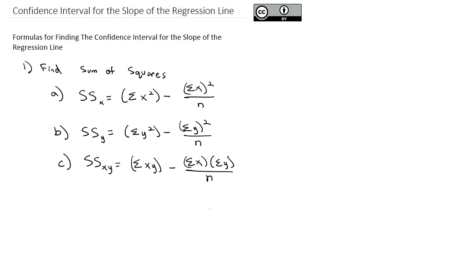First we have to find those three sum of squares pieces, because we're going to use those to find the next two pieces. The second piece we need to find is the critical value, t sub alpha over 2, and the standard error.